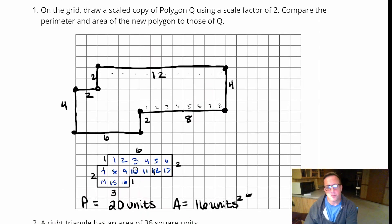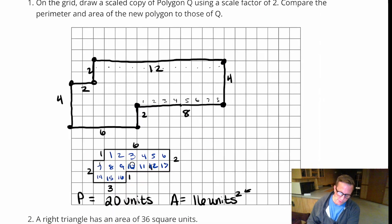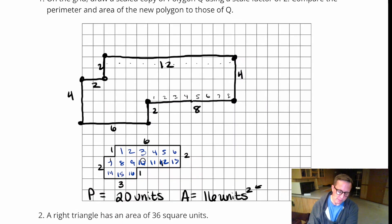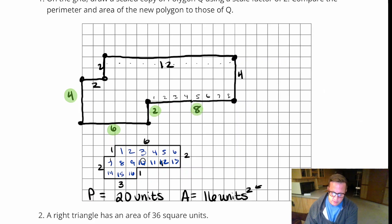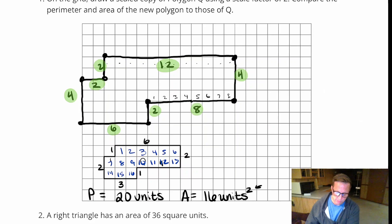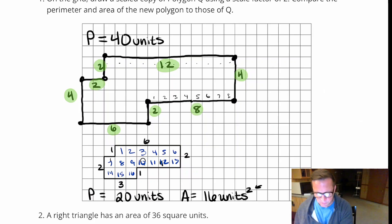So, compare the perimeter and area. You might think that both the perimeter and the area are going to double. One of those statements is true, but not both. Adding up the sides of the scaled copy: 4 plus 6 is 10, plus 2 is 12, plus 8 is 20, plus 4 is 24, plus 12 is 36, plus 2 is 38, plus 2 is 40. So the perimeter definitely did double — from 20 to 40.